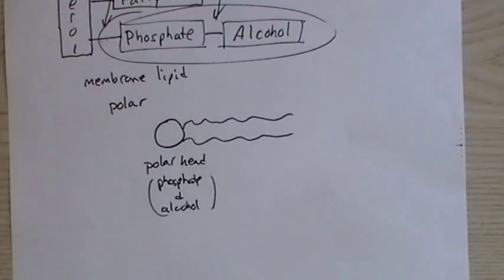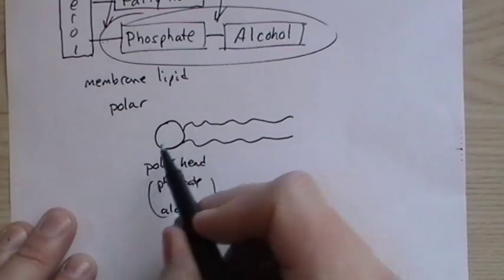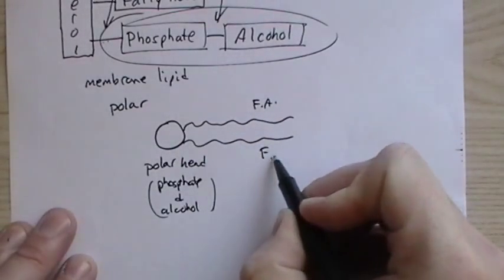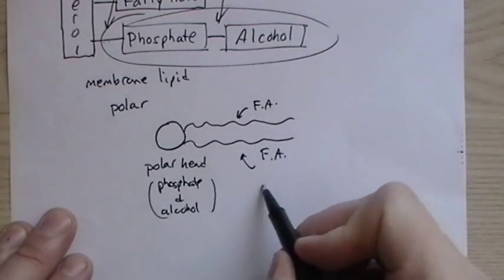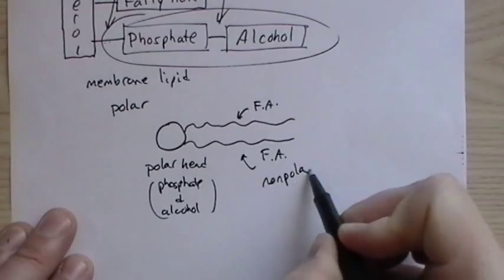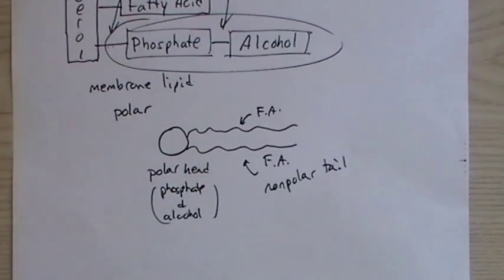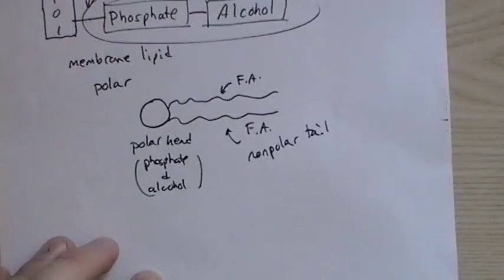And there's the phosphate and alcohol make up that polar head. Your book does have pictures of the full molecule, and it's not as clear cut as this. But it definitely functions in this way, where there's a polar head, and then you have the two fatty acid groups here that make up the non-polar tail. We should know the basic structure, and definitely the block diagrams.